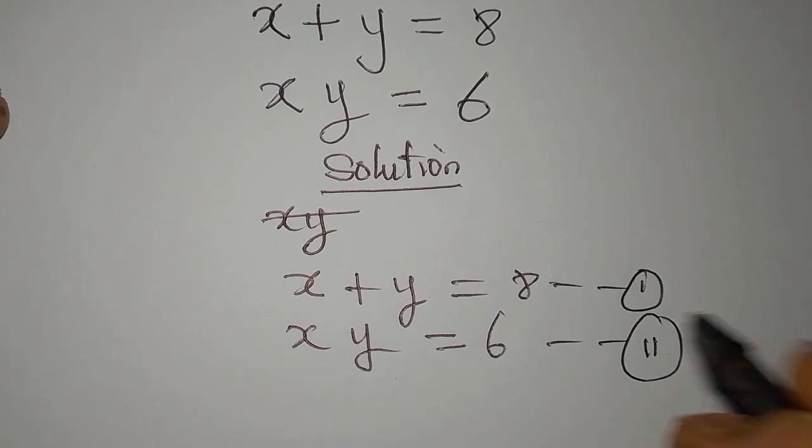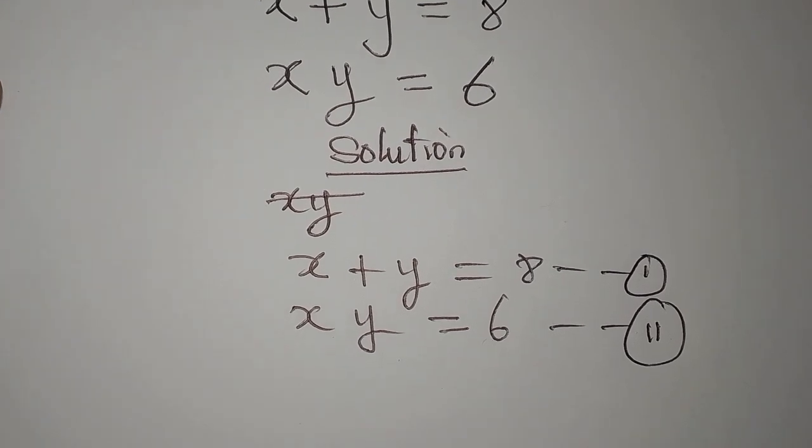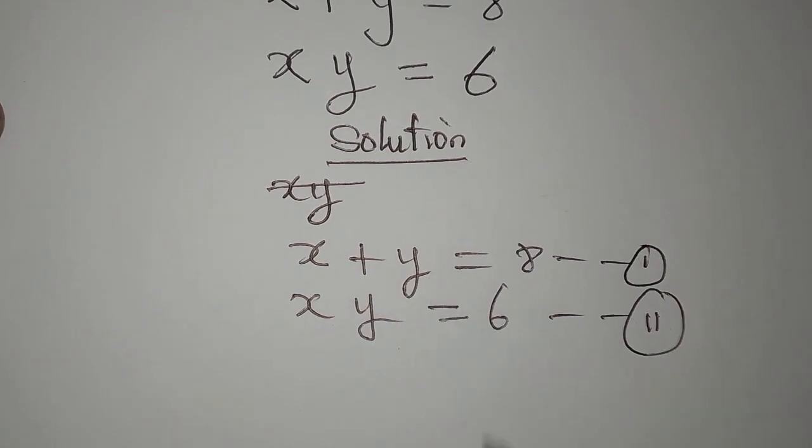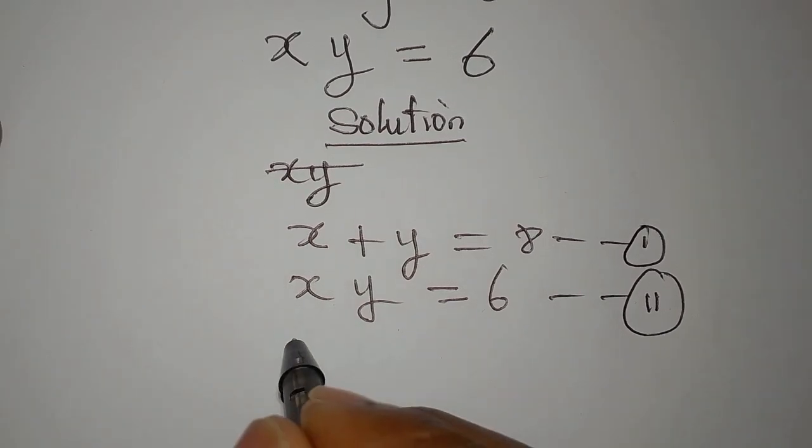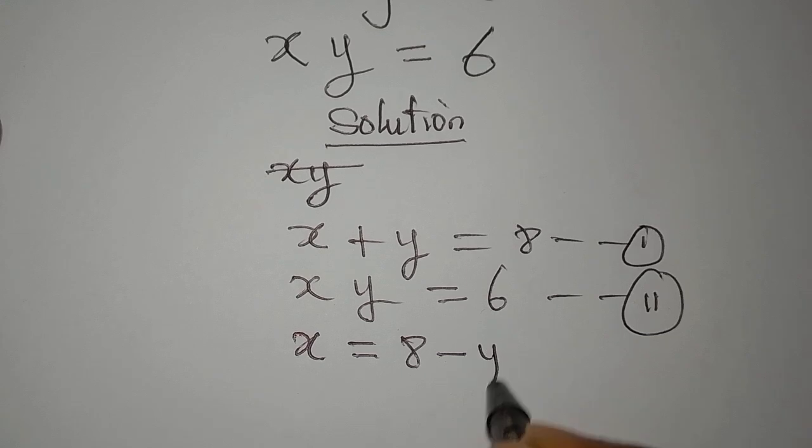We are going to solve this simultaneously because one equation, two unknowns. Okay, so we need to combine both of them so that we can solve them simultaneously. Now, from the first equation, we can have x to be equal to 8 minus y.